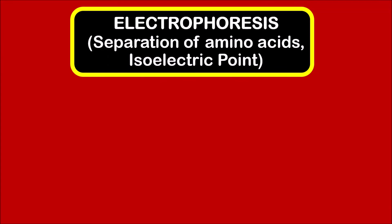Hello everyone, welcome to Chemison Complete Chemistry. In today's video we are going to learn a technique called electrophoresis, which is a separation technique used for separation of amino acids. We'll also see what is the isoelectric point.